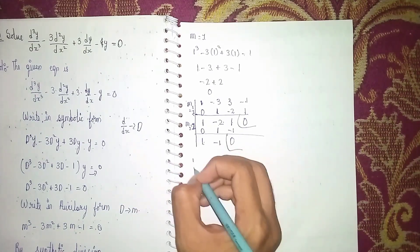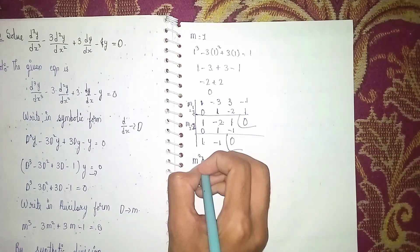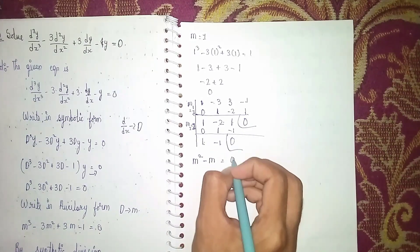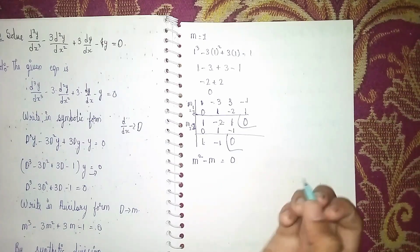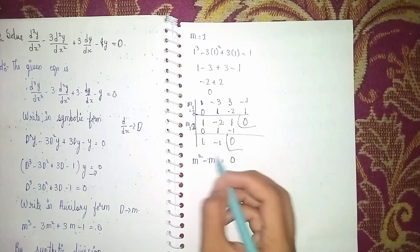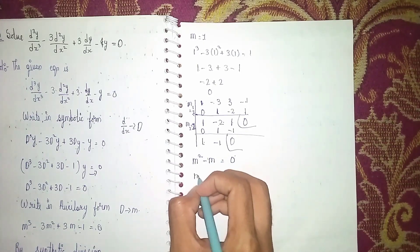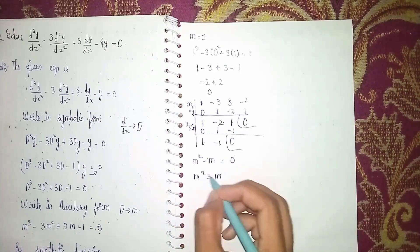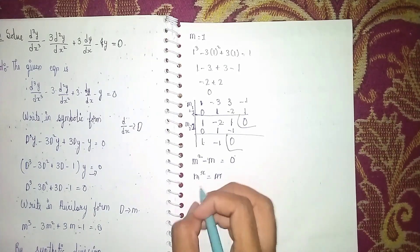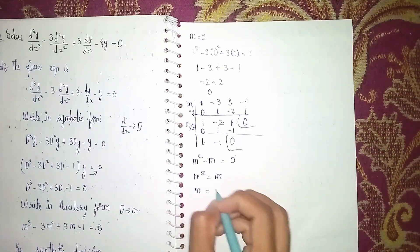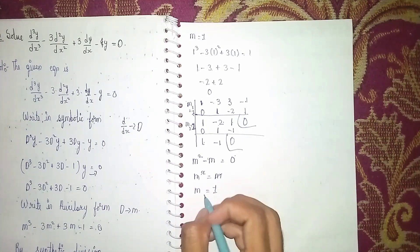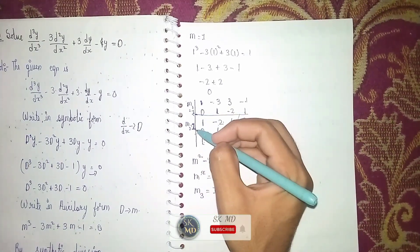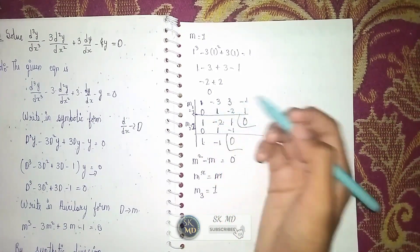Writing in the form of roots: m² minus m = 0. Sending minus m to the other side: m² = m, so m cancels and m = 1. This means both remaining roots are equal. So m₁ = 1, m₂ = 1, and m₃ = 1.